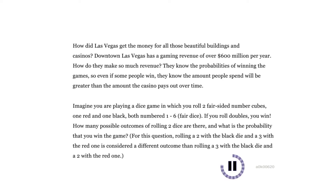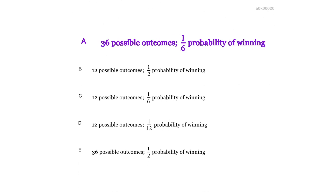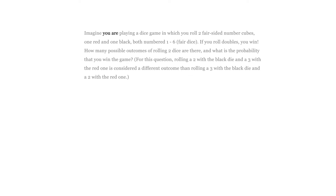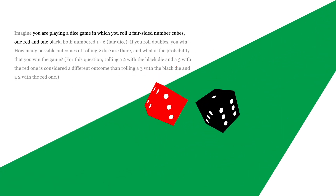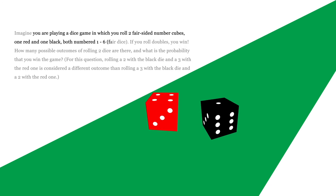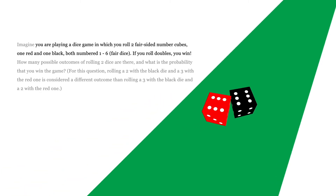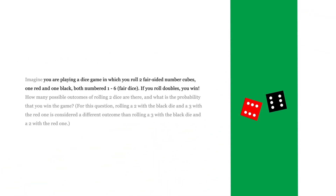Press pause and answer the question. So you're playing this dice game, and you have two fair dice — one's red and one's black — numbered one through six, just like normal dice. If you roll doubles, you win. The question is: how many possible outcomes of rolling two dice are there, and what is the probability that you win the game?